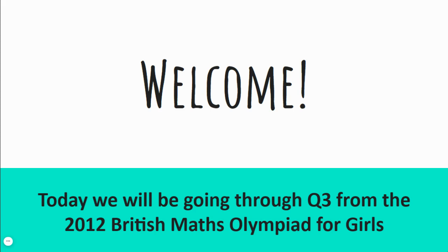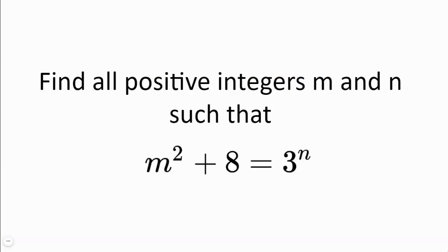Welcome. Today we'll be going through question 3 from the 2012 British Mass Olympiad for girls. Find all positive integers m and n such that m squared plus 8 is equal to 3 to the power of n.